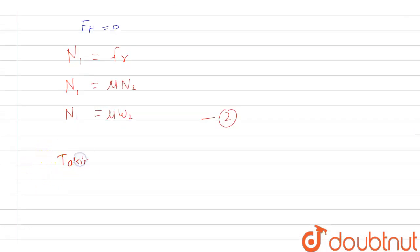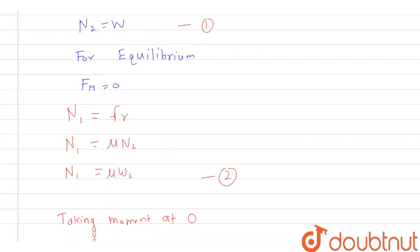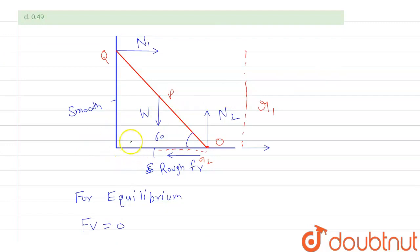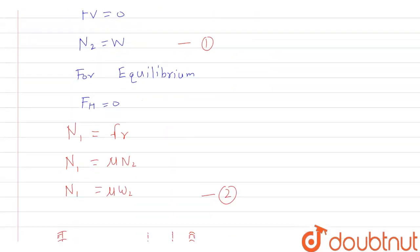Taking moments about O: moment equals force times perpendicular distance. For N1, the perpendicular distance r1 equals the height of the ladder top, which is 4 times sin 60. For W, acting at the center of mass, the perpendicular distance r2 equals 2 times cos 60. Setting the net moment to zero: N1 times r1 minus W times r2 equals zero.